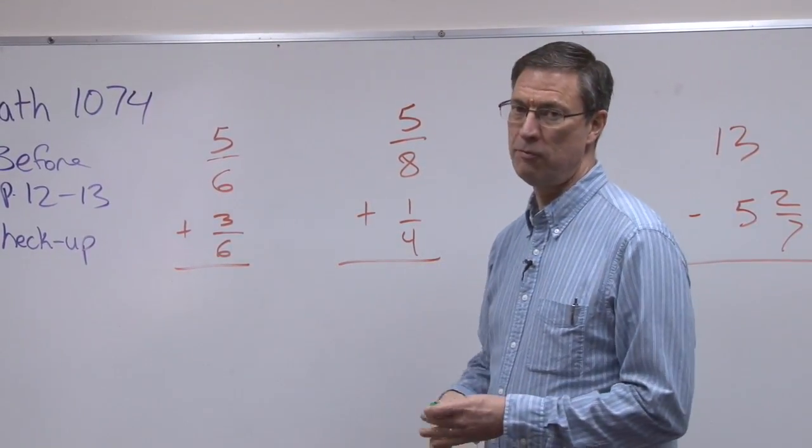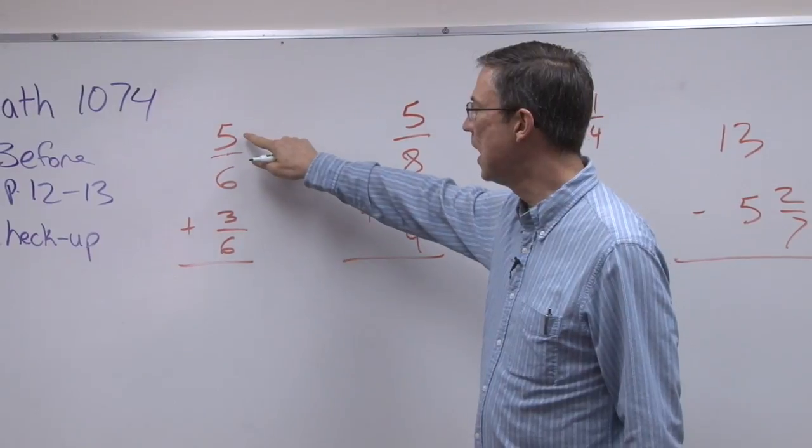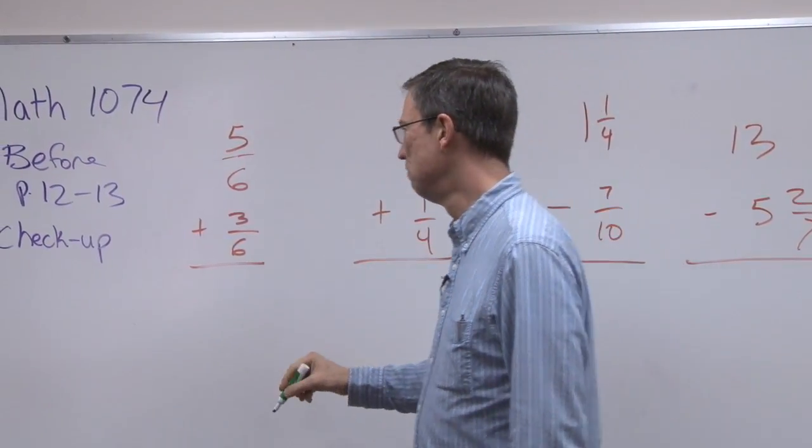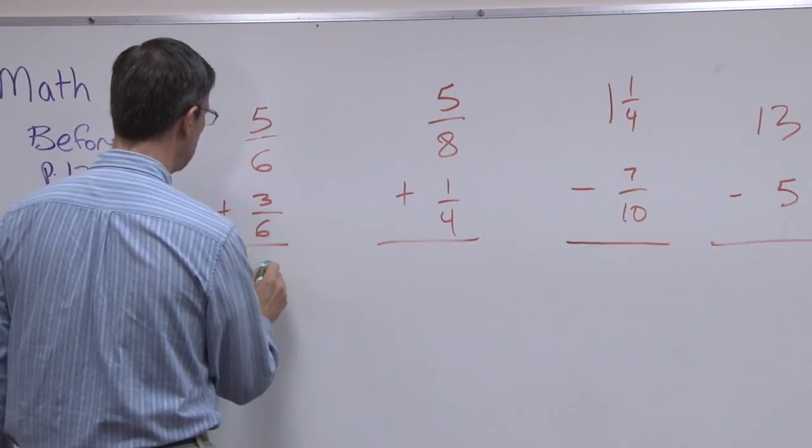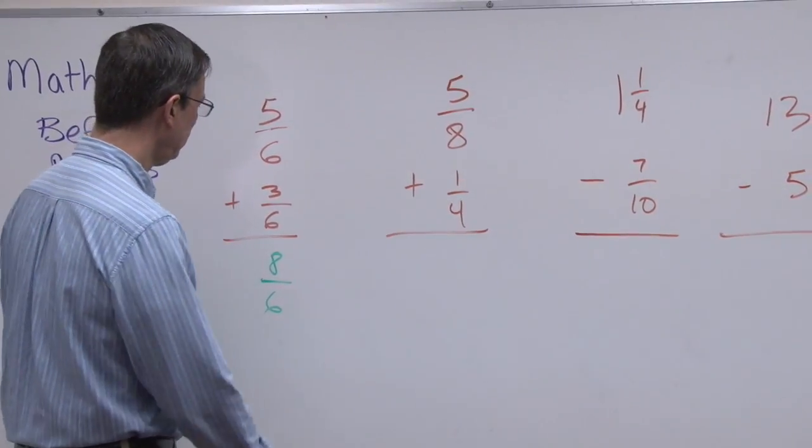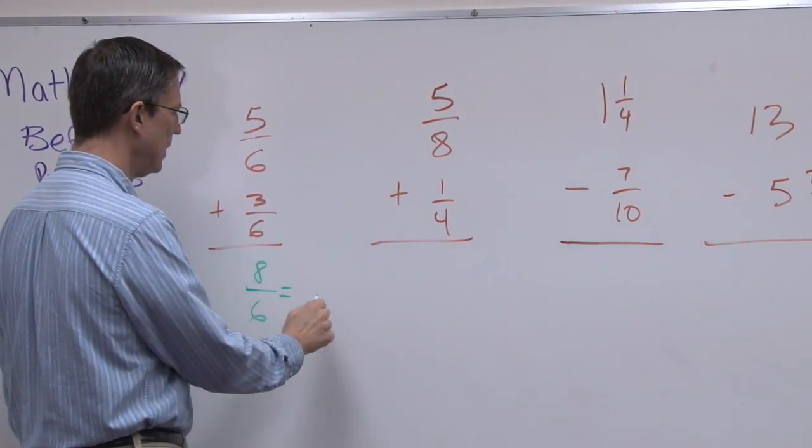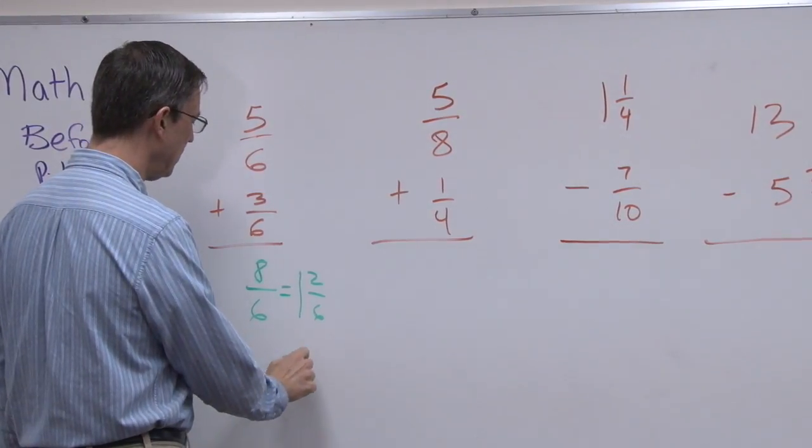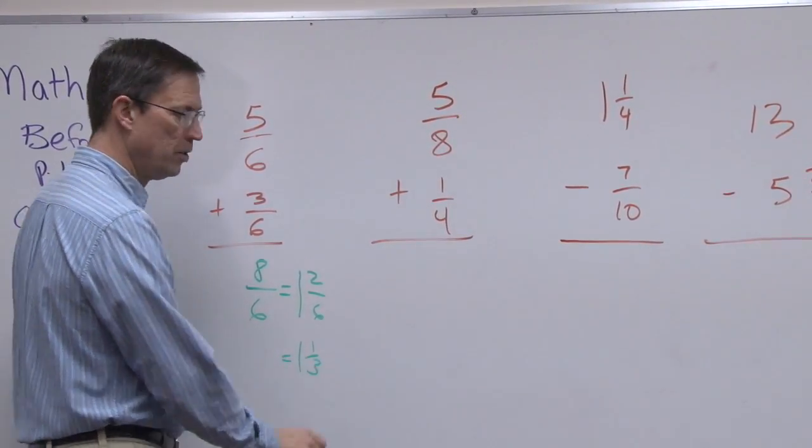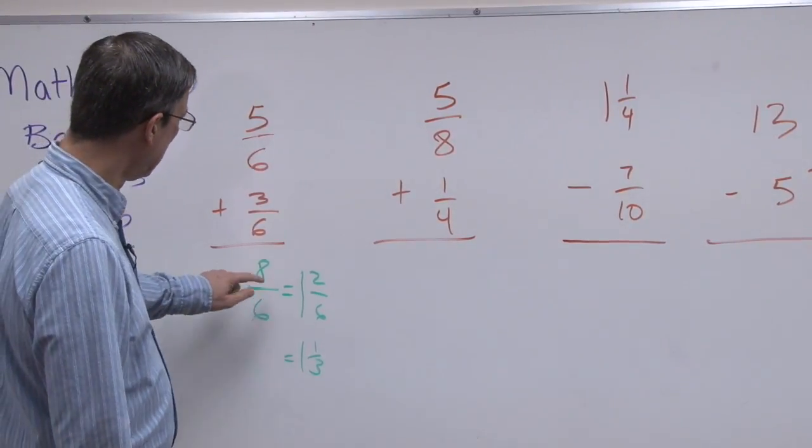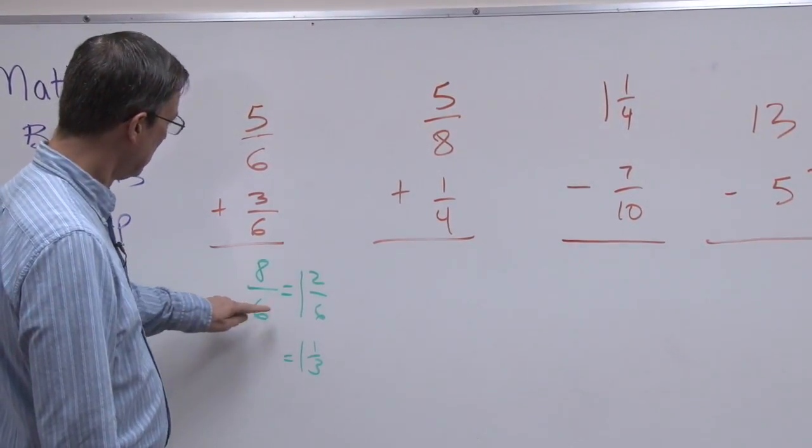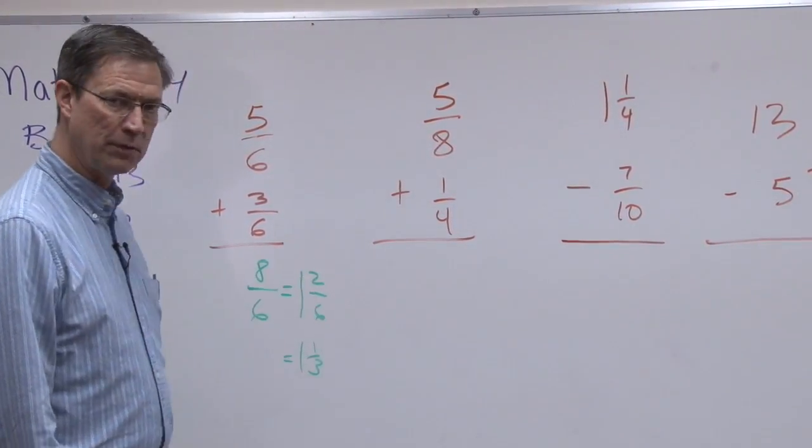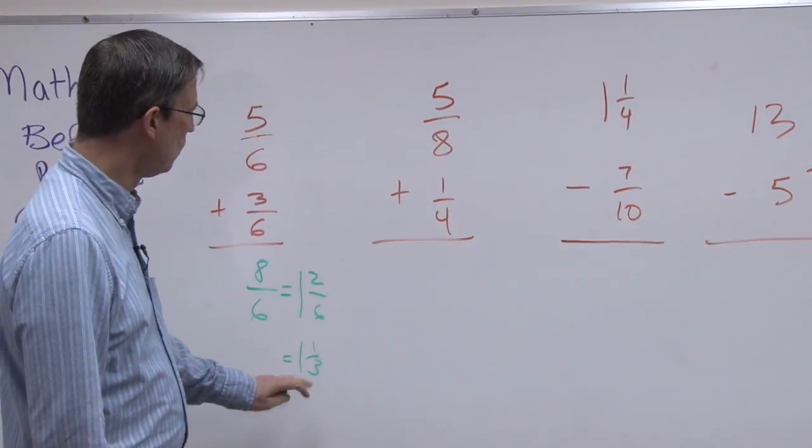Now this one's easy. They already have the same denominator, so I can just add the two numerators, which would be 8 over 6, and then we can reduce that and have 1 and 2 sixths, and then that reduces and becomes 1 and 1 third. Because I can divide 8 divided by 6, and then both of these are divisible by 2, becomes 1 and 1 third.